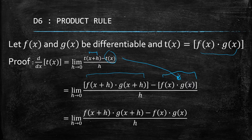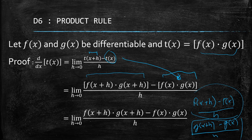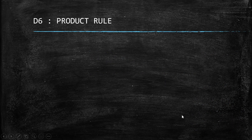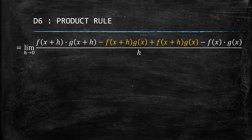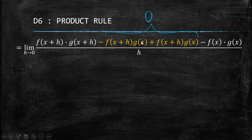Our goal is to produce the expressions [f(x+h) − f(x)] / h and [g(x+h) − g(x)] / h, since those are the derivatives. The technique involves adding zero — specifically, we add and subtract the term f(x+h)·g(x). These two terms cancel each other, so we are not changing the value of the limit, but this allows us to manipulate the numerator.